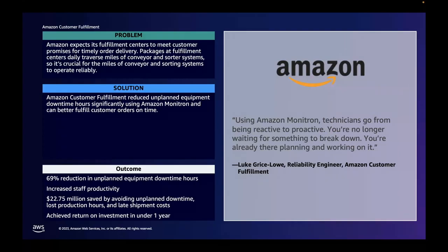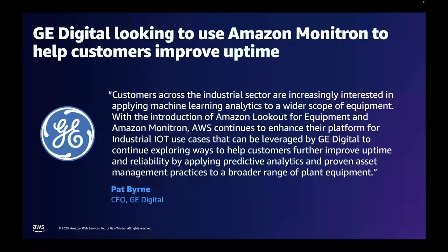Additionally, using Amazon Monitron, Amazon customer fulfillment reduced unplanned equipment downtime hours by 69%, helping the company meet its goal of fulfilling customer orders on time. Amazon customer fulfillment has fulfillment centers worldwide where employees pick, pack, and ship customer orders. Because of the global scale of the company, they wanted to implement a predictive maintenance program as part of its broad maintenance strategy to make it more affordable and efficient. Using Amazon Monitron, they can be more effective with technician time, avoiding costly unplanned downtime. And the CEO of GE Digital is looking forward to leveraging Monitron to help customers improve uptime and reliability by applying predictive analytics and proven asset management practices to a broader range of planned equipment.